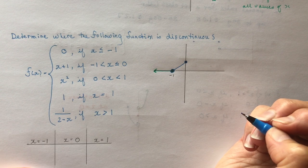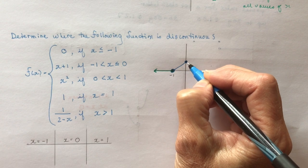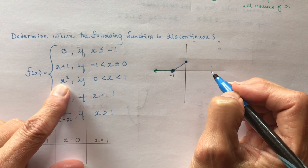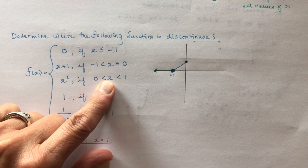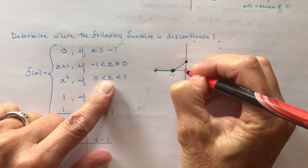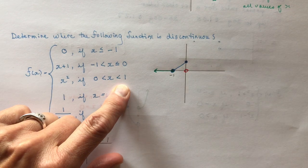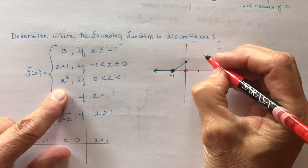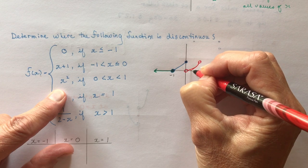So far it's continuous from negative infinity up to x = 0. Now for between 0 and 1 (exclusive on both ends): at x = 0 we need an open circle, and at x = 1 the value would be 1, so another open circle at (1, 1). This piece is a parabola going upward — x² — between those two open circles.